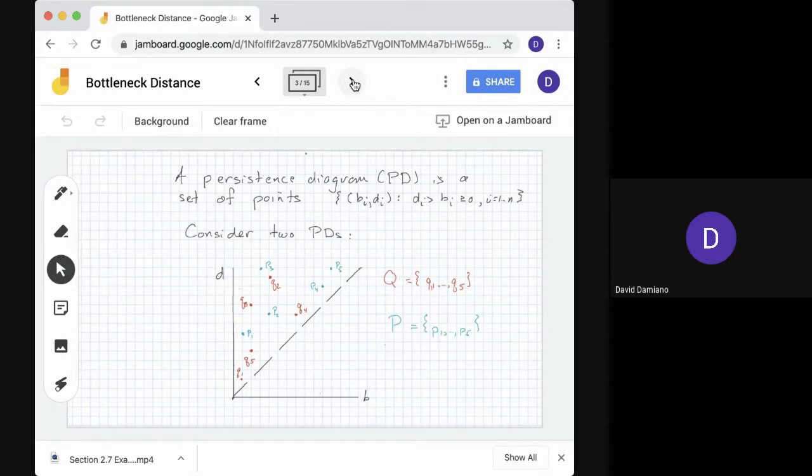So here's an example to work from. Here are a couple of persistence diagrams on the same set of axes. A persistence diagram is a set of ordered pairs, B_i, D_i. The second coordinate is bigger than the first, so it's above the diagonal. And the first is greater than or equal to zero, so it's in the first quadrant. And we want a finite number. So here we have a P and a Q. They both happen to contain five points.